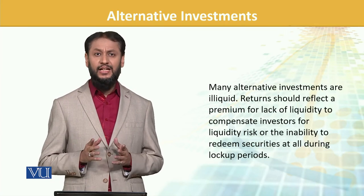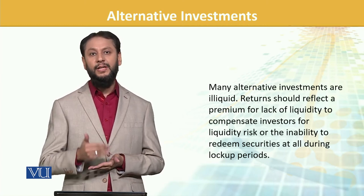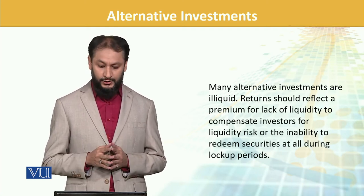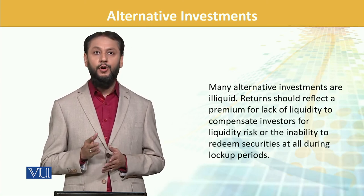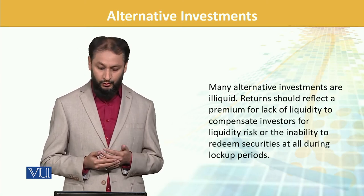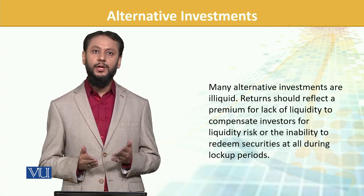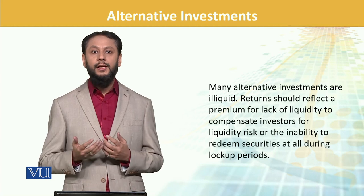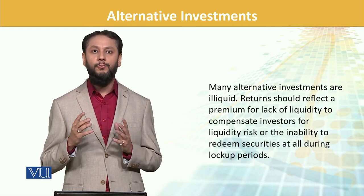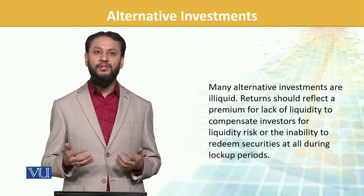Many alternate investments are illiquid. Return should reflect a premium. Ab jab illiquid cheez mein invest karenge, toh aapko phir uska premium milna chahiye. Illiquidity ko jo aapne adopt kiya hai, you should get the return as a premium for that. So return should reflect a premium for lack of liquidity to compensate the investor for the liquidity risk. Yeh risk hi hai — ke main bechna chahoon toh easily bech nahi sakta. Toh isliye phir mujhe return thoda zyada do. Ya agar aap mujhe lock-up period de rahe ho, toh phir mujhe return baqiyon se zyada do. Yeh higher return and higher risk category mein bhi aa jaata hai, specifically with respect to the illiquidity part. But overall portfolio mein it's a good gesture, because it increases the diversification benefit which we derive when we add alternate investments.